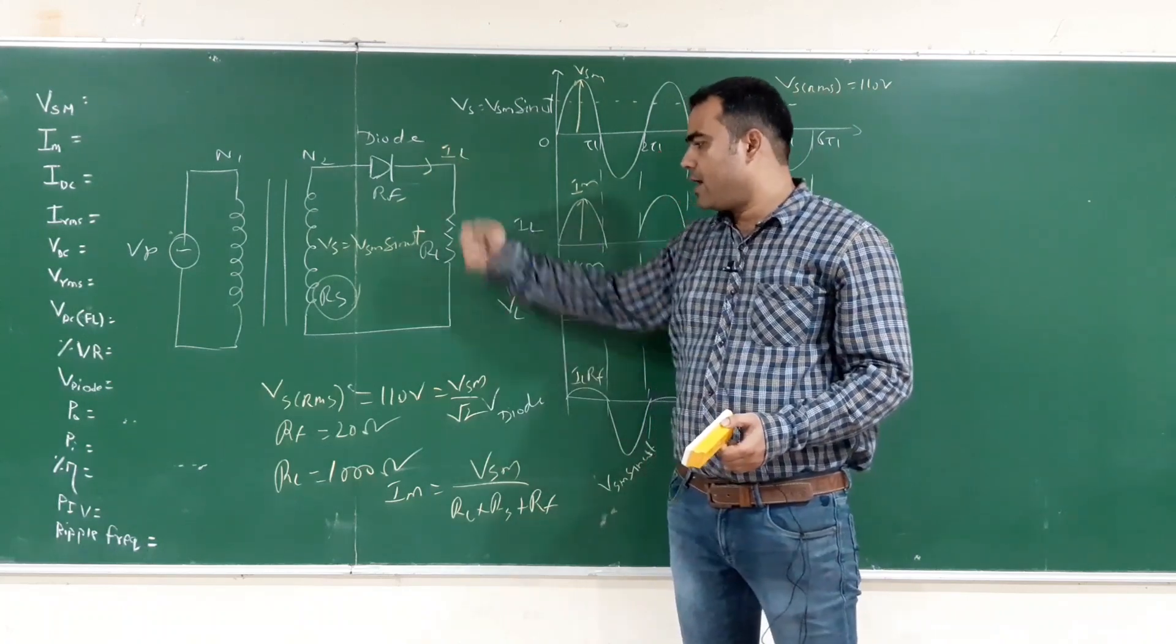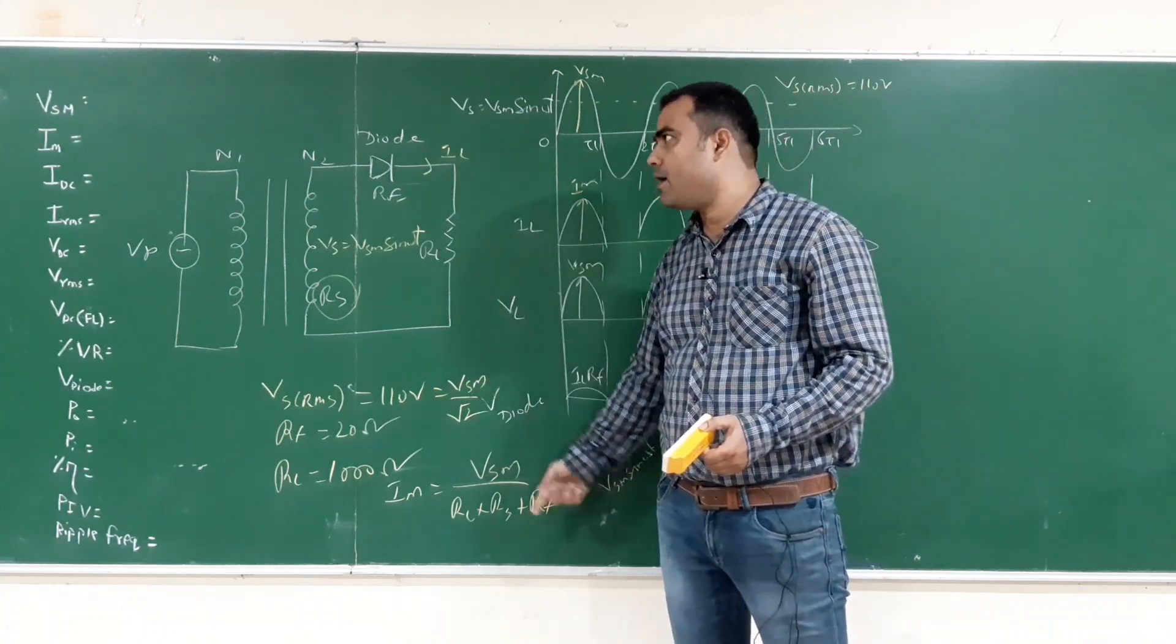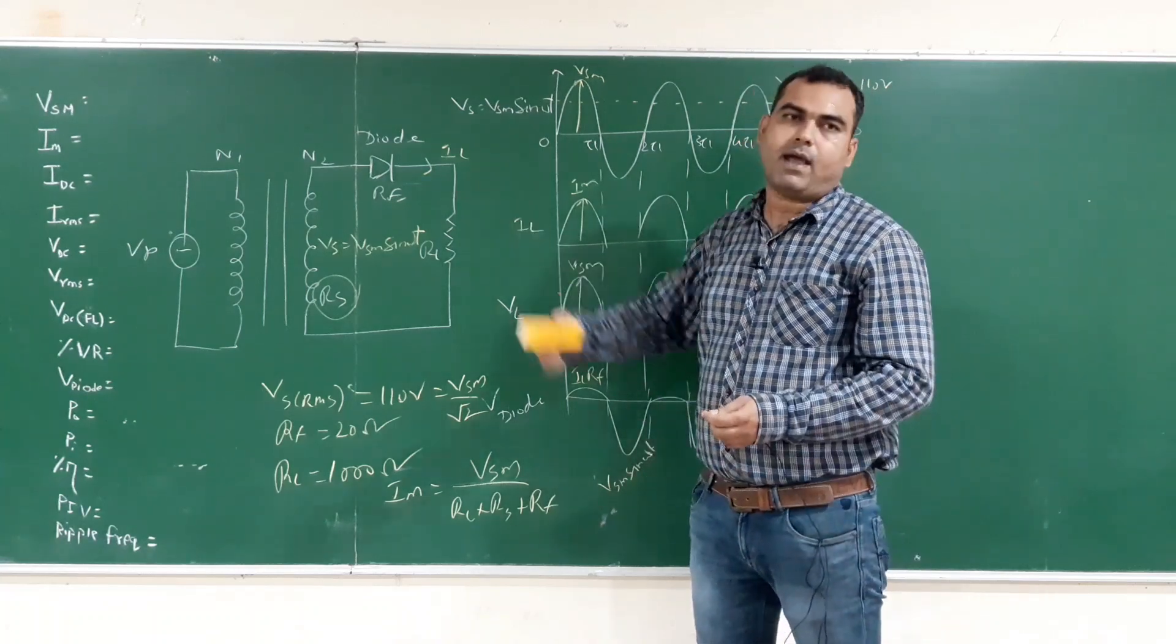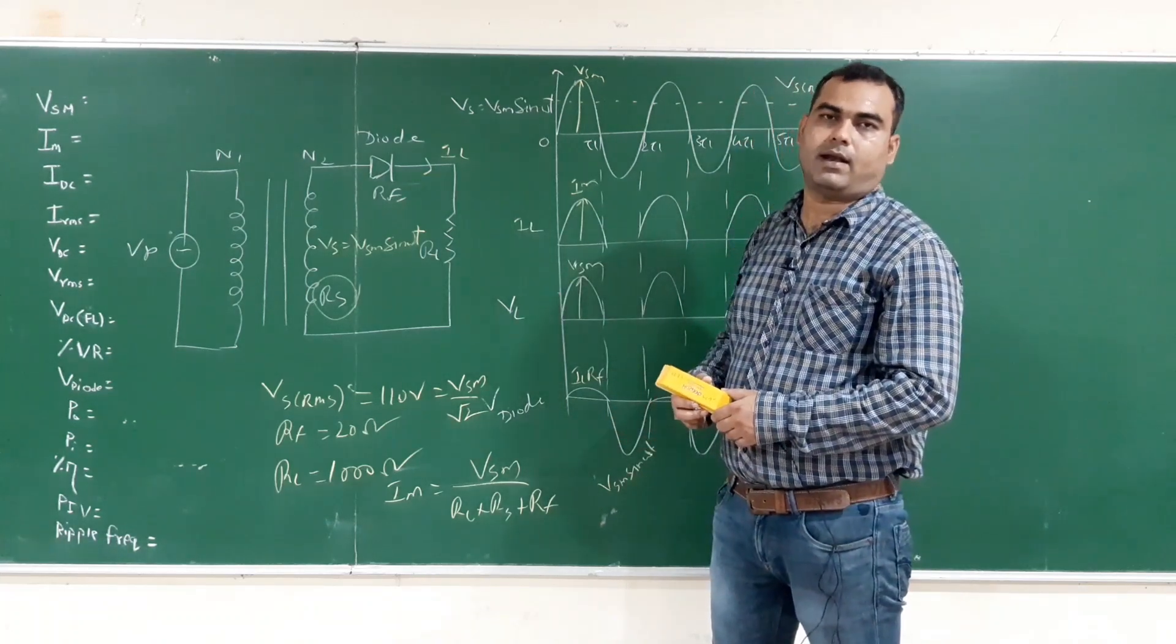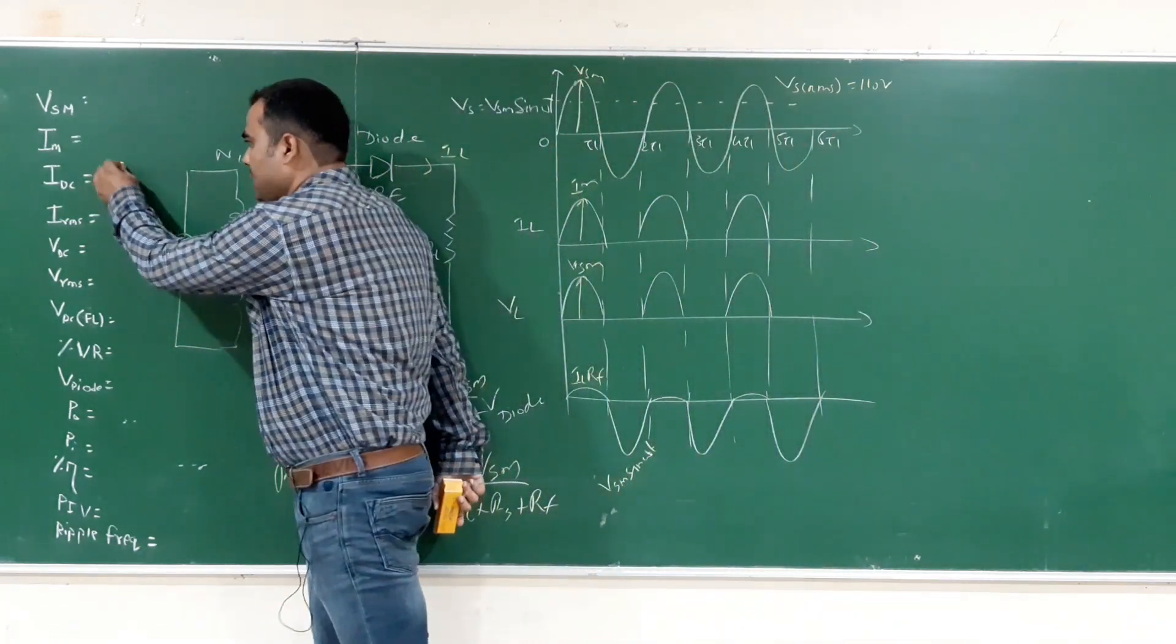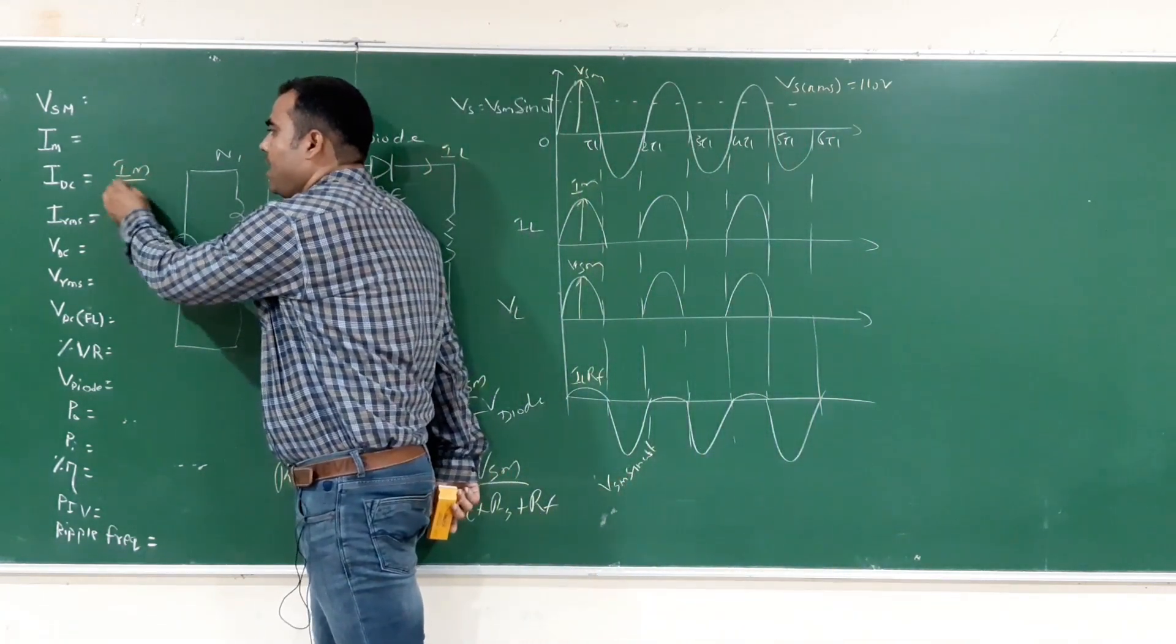On solving this we get IM. After calculating in calculator we get Vsm and IM values. After that, we will use formulas and put the values.